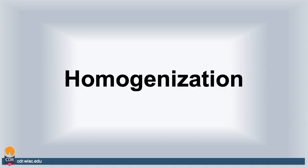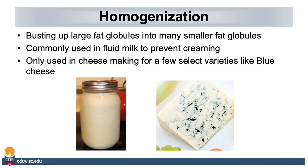Another process in dairy ingredient production is homogenization. In layman's terms, homogenization is the busting up of large fat globules into smaller fat globules. This is very commonly used in the production of fluid milk to prevent creaming, which is the separation of fat from the milk. This is also very common in a few cheesemaking varieties, such as the production of blue cheese.